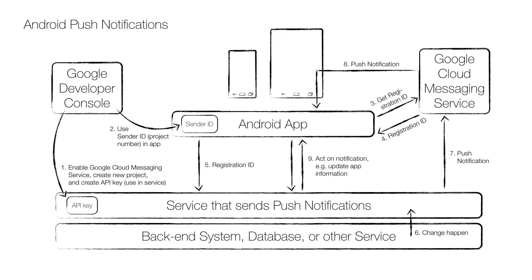To make push notifications work, you first need to enable the Google Cloud Messaging Service — the GCM — on your Google account and then create a project number, which is the same as the sender ID to be used in your code. You also need to create an API key, and you can find more details on the Android developer site. I have the link down in the description. Those are the two first steps.